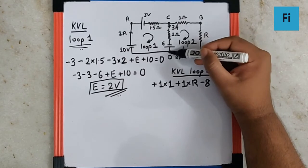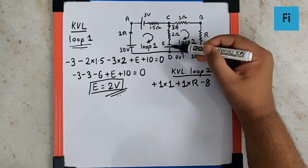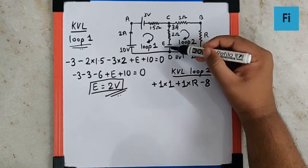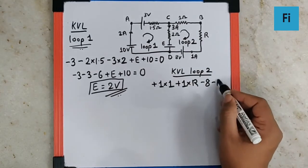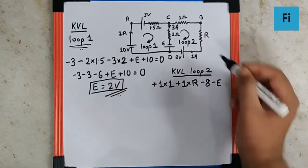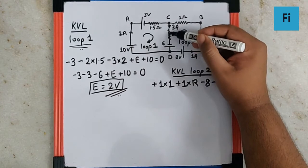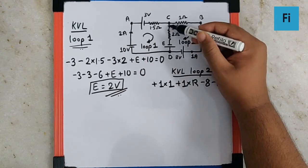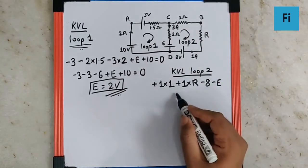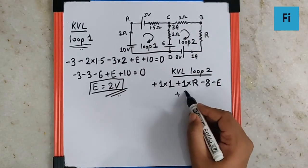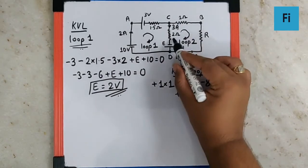Next we encounter the EMF E, traversed from positive to negative terminal, giving minus E. For the resistance traversed opposite to the current direction, we get plus IR, where the current is 3 ampere and the resistance is 2 ohm, giving plus 6.